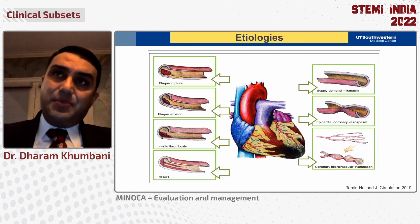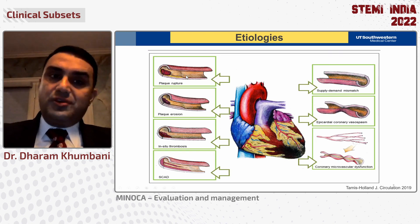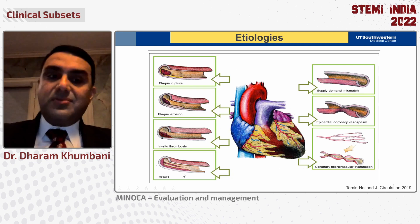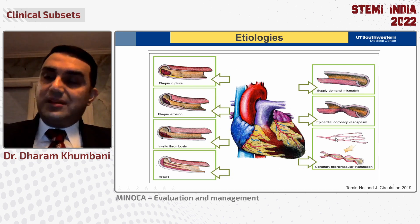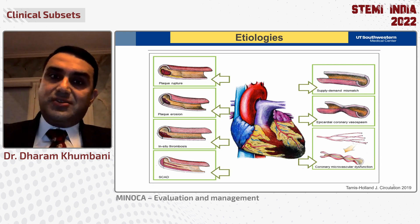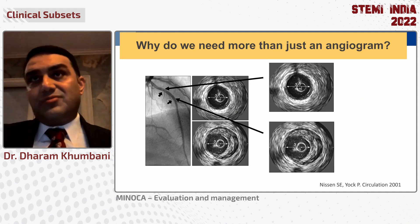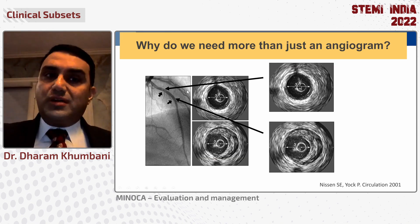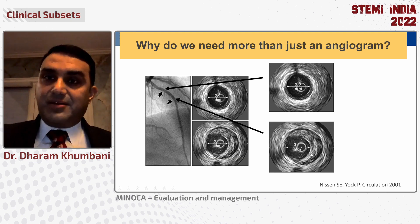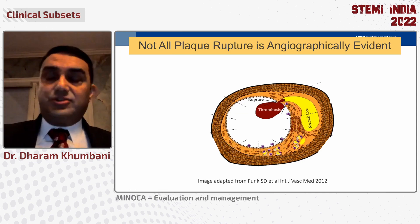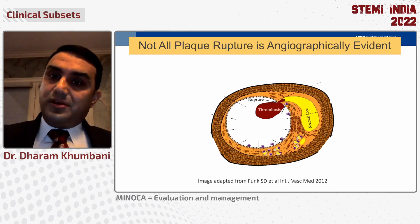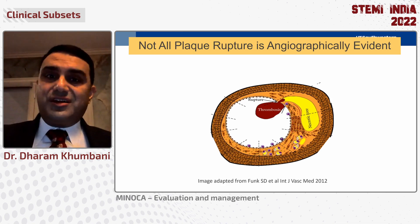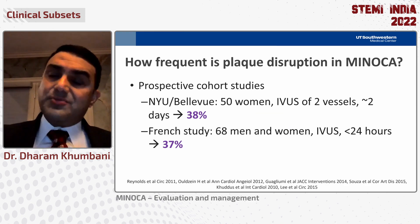MINOCA is a heterogeneous condition. There are many different epicardial and microvascular conditions that can result in it — plaque rupture, plaque erosion, in-situ thrombosis, embolic embolism, SCAD, microvascular disease, vasospasm, and supply-demand mismatch. One underlying reason is that an angiogram is just a luminogram — it does not tell us about the plaques. Two segments of the same vessel can look angiographically identical, but one may have evidence of positive remodeling and plaque. So not all plaque rupture is angiographically evident.